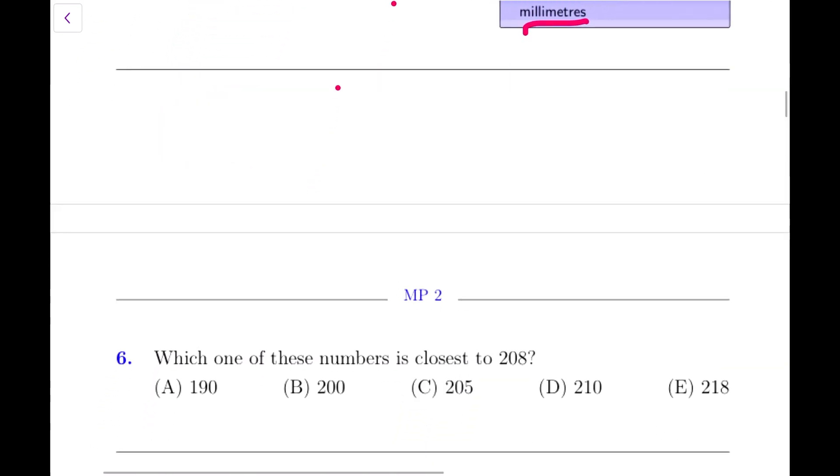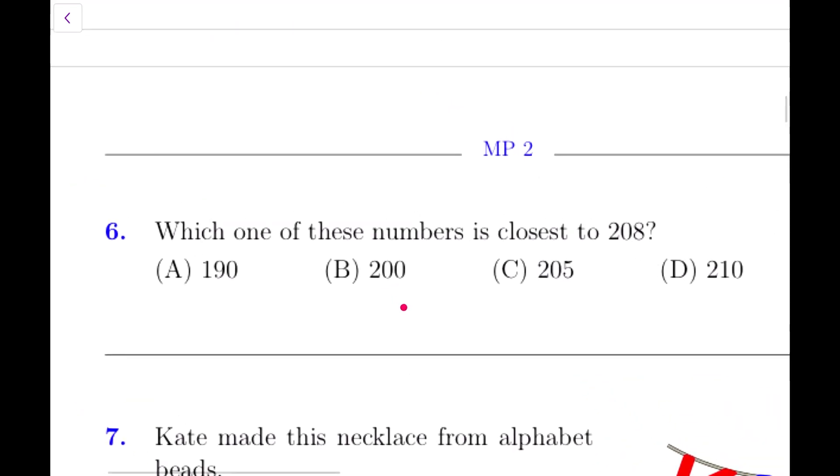Alright, let's go ahead. Question number 6: Which of these numbers is closest to 208? Now we are looking for a number closer to 208. 190 is too far away. 200 is 8 away. Let's see if you have a closer number. Oh, 2005 is just 3 away - 2006, 7, 8. Let's check for 210. 210 is just actually 2 away. So the right answer would be 210, which is just 2 away from 208.